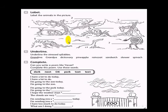Exercise four. Label the animals in the picture. Number one. Hippo. Number two. Monkey. Number three. Giraffe. Number four. Lion. Five. Snake. Number six. Elephant. Number seven. Zebra. Underline the stressed syllable. Grandma. Grandma. Dictionary. Again. Grandma. Grandpa. Dictionary. Pineapple. Raincoat. Sandwich. Skewer. Spinach. All these words have stress on the first syllable.